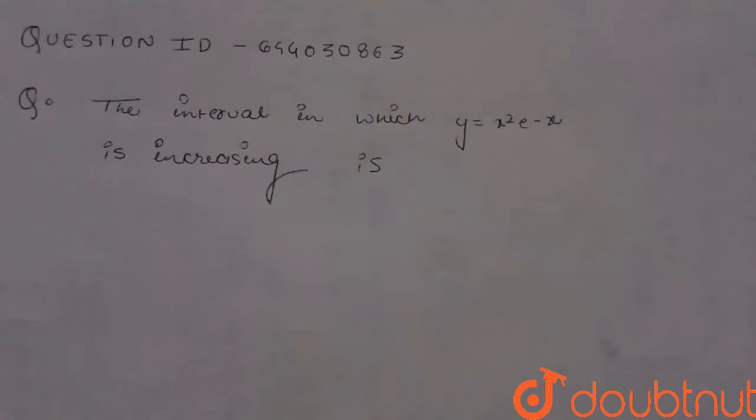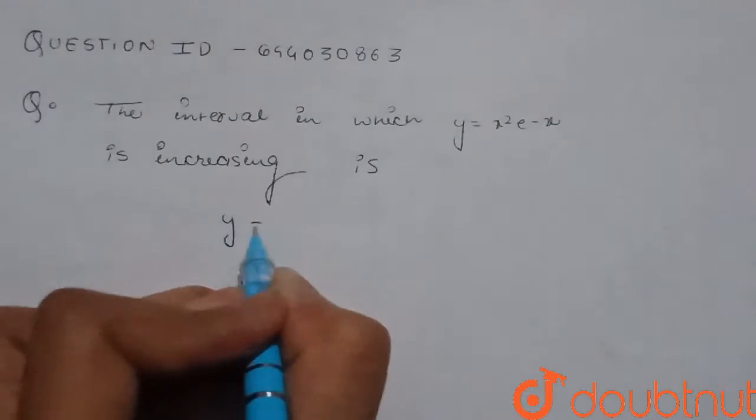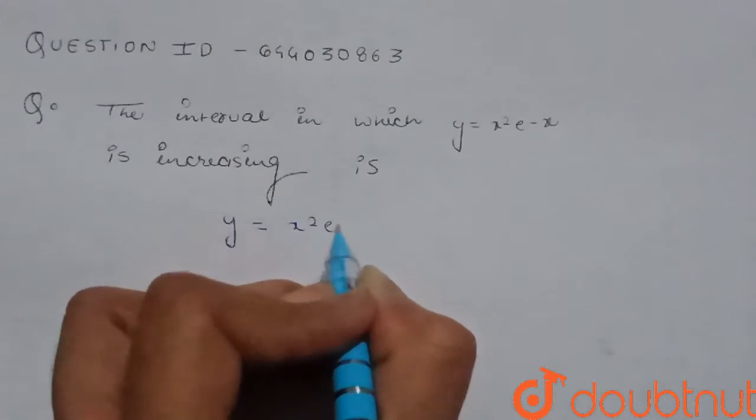The interval in which y equals x squared e raised to the power minus x is increasing. So the function given to us is y equals x squared e raised to the power minus x.